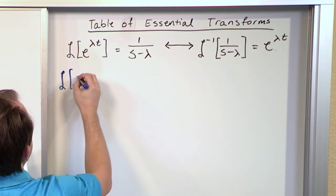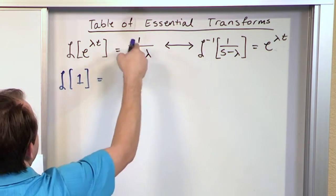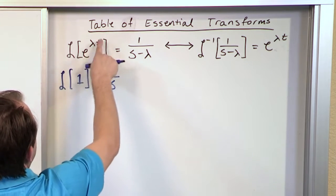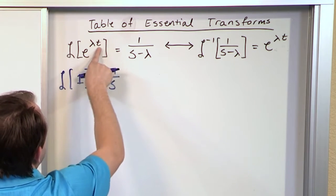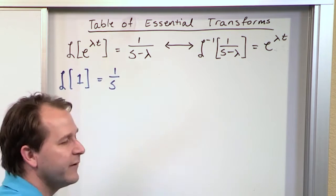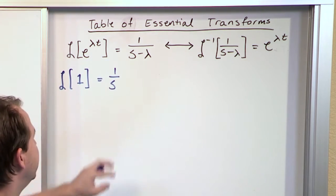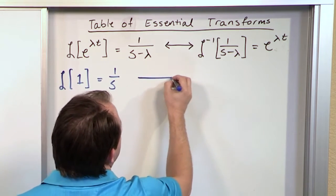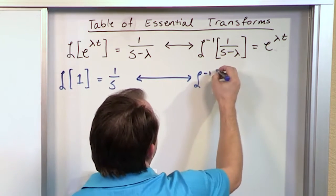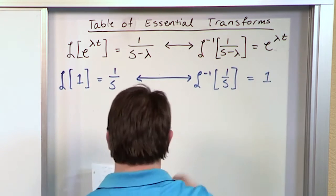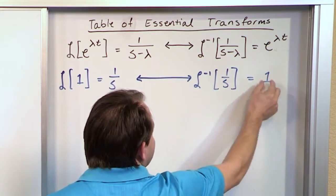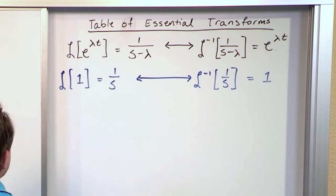Next, the Laplace Transform of the number 1 is 1 over s. This is really a special case of the exponential: when λ equals 0, e to the λt reduces to 1, and 1/(s−λ) reduces to 1/s. We include it separately because you take Laplace Transforms of constants quite often. The inverse Laplace Transform of 1/s is equal to 1 — going from S back into the time domain.